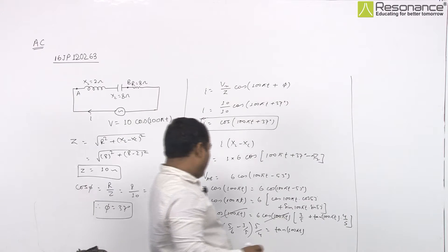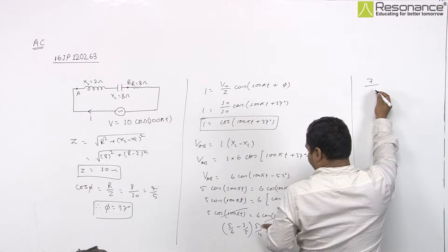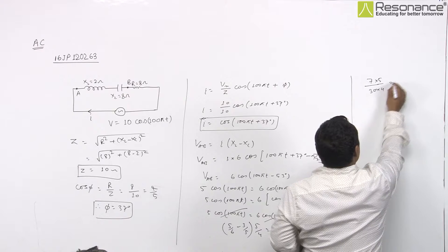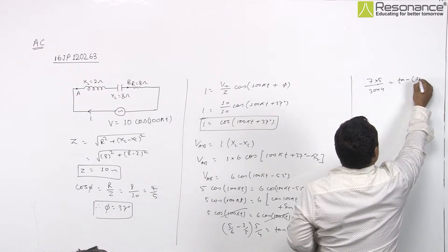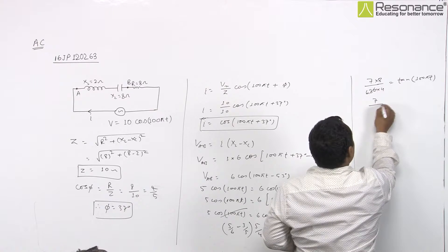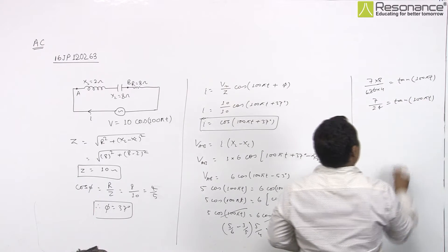So by solving this, we can find tan 100 pi T as 7 upon 24.